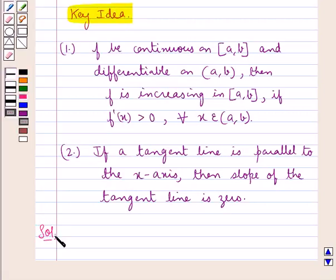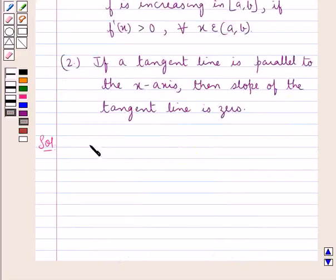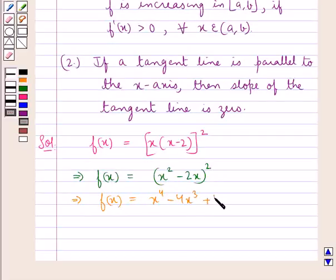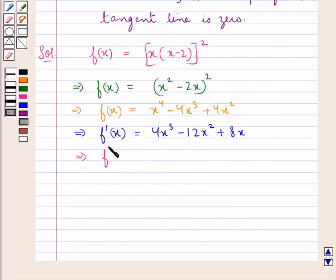Let's now proceed with the solution. We are given f(x) and we have to find the values of x for which this function is increasing. We have f(x) equal to x into (x minus 2) the whole square, which can be written as f(x) equal to (x squared minus 2x) the whole square, and further f(x) equal to x to the power 4 minus 4x cubed plus 4x squared. Now differentiating both sides, we get f'(x) equal to 4x cubed minus 12x squared plus 8x.